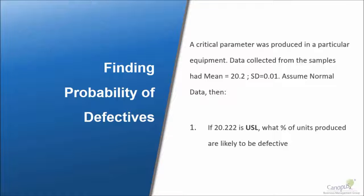Now, the question that we want to answer is: if 20.222 is the upper specification limit for this process, which means the customer does not want any data point to go beyond 20.222—if it happens, then it is considered as a defective—the question is...